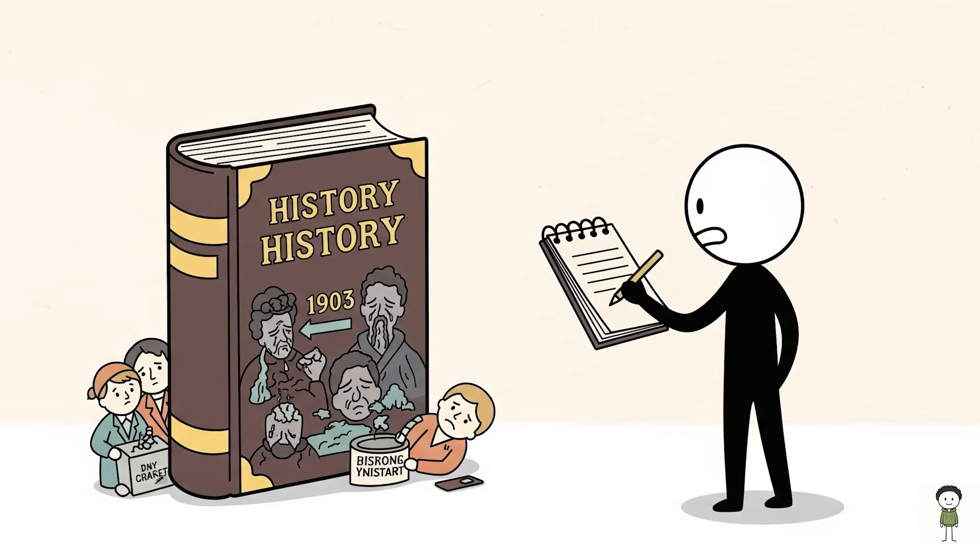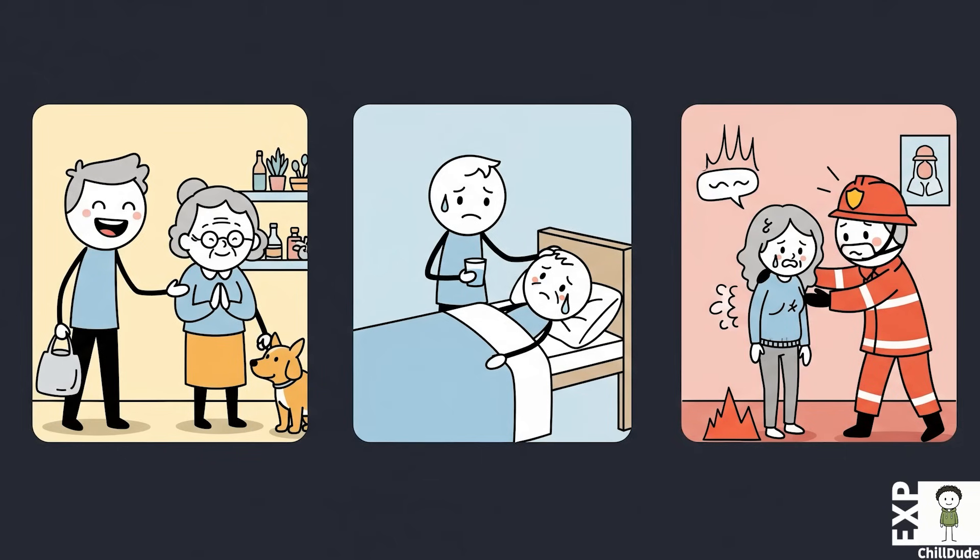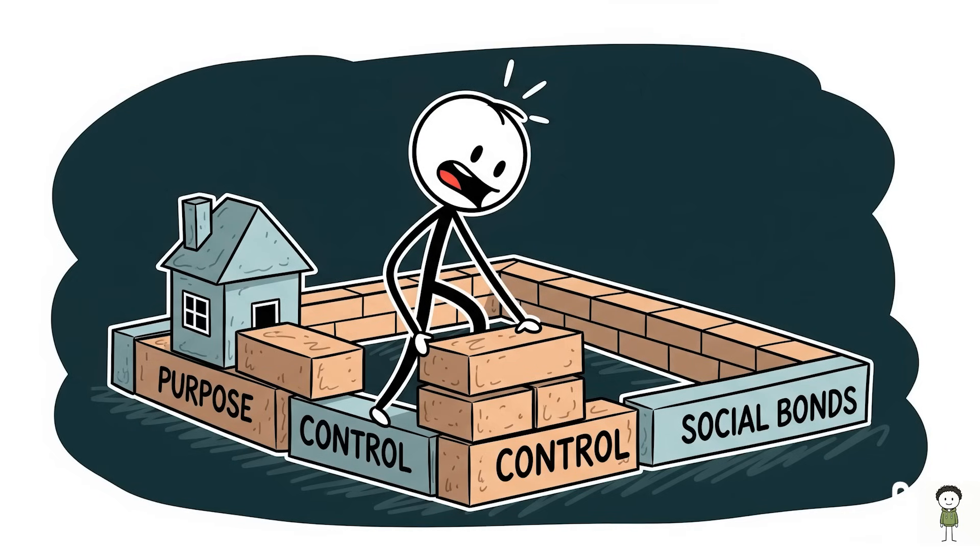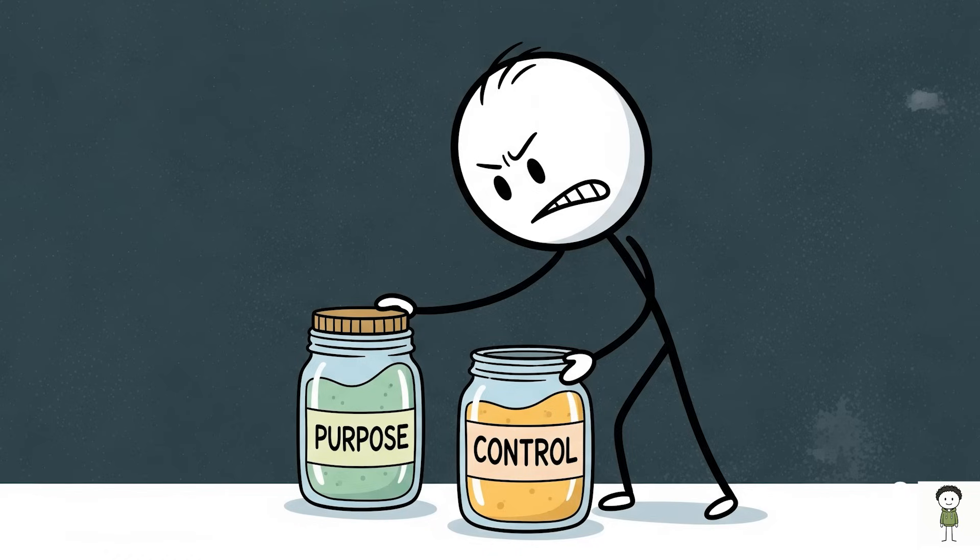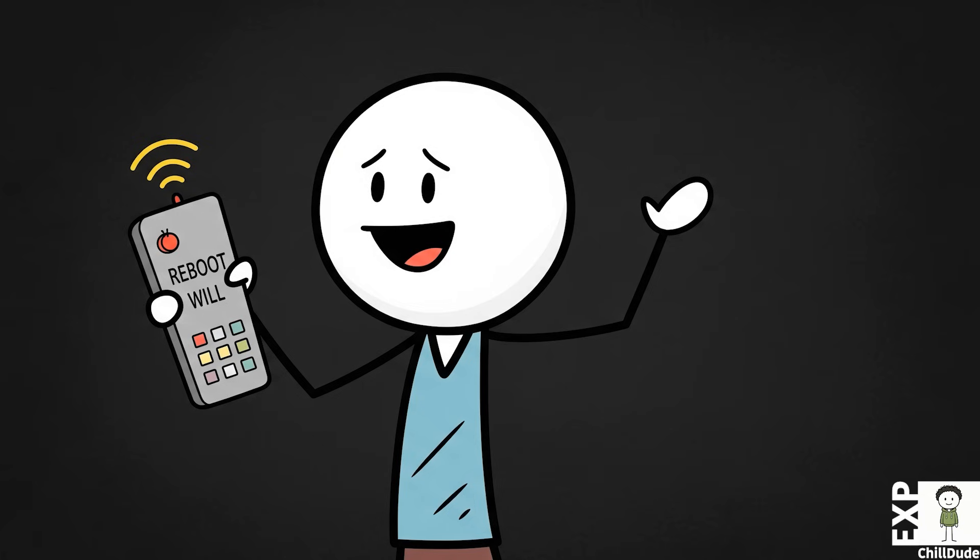Understanding this mechanism does more than just explain historical tragedies, it hands us a powerful tool for the present. It informs how we care for the elderly in nursing homes, how we treat patients facing grim diagnoses, and how we must approach our own moments of crisis. It teaches us that fostering a sense of purpose, nurturing control over our environment, and maintaining social bonds are not luxuries, but essential acts of self-preservation. In a world that can often feel overwhelming, the knowledge that we can actively protect and reboot our own will to live is perhaps the most profound survival skill of all.